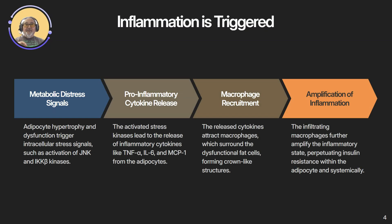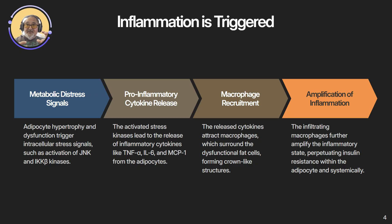Inflammation is triggered. As the adipocyte becomes dysfunctional, it activates stress kinases like JNK and IKK-beta. This leads to pro-inflammatory cytokine release, especially TNF-alpha, IL-6, and MCP-1, increasing inflammation. These cytokines attract macrophages, which surround the dying or stressed fat cells in crown-like structures. This is when the fat cells start to break down — and the fat goes right back into your bloodstream. These macrophages don't just clean up; they amplify inflammation, promoting insulin resistance within the adipocyte.